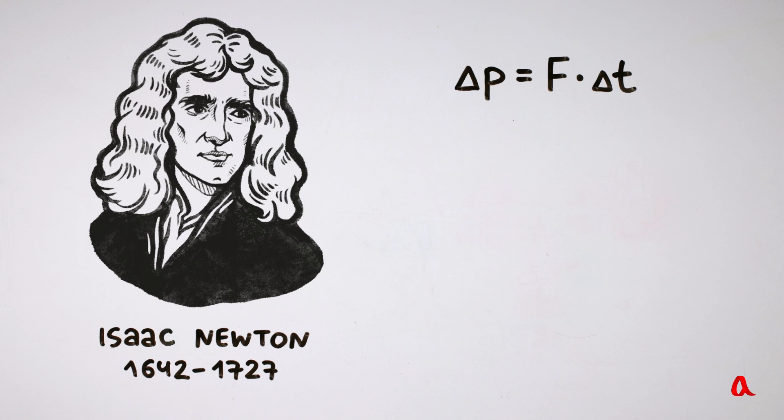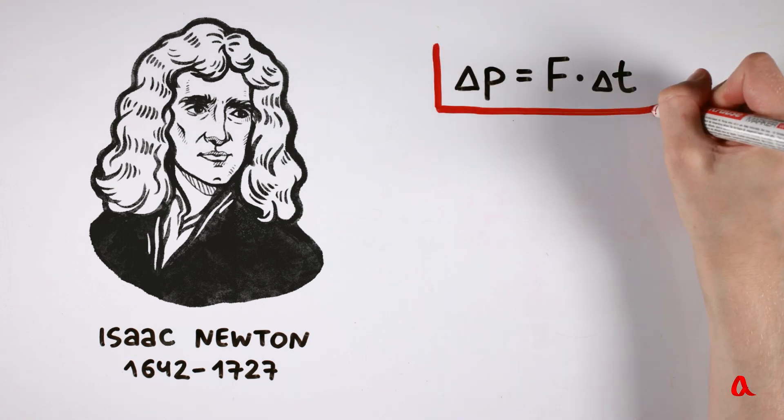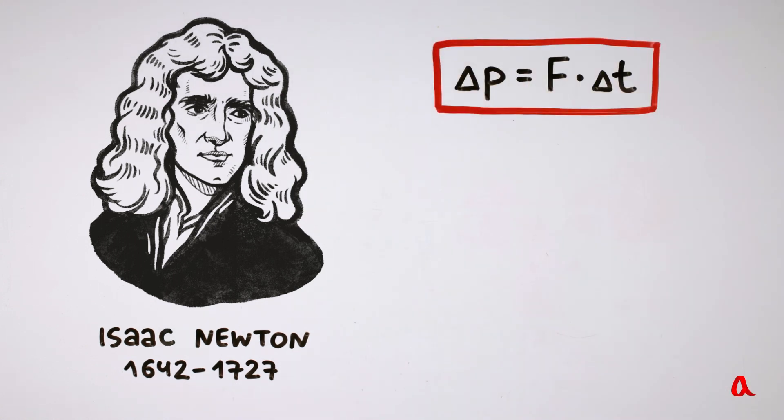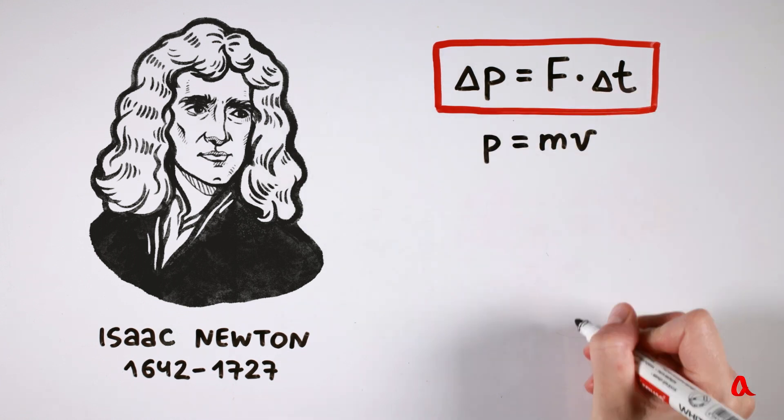We have already written down Newton's second law as delta p equals f by delta t. Impulse p of a body with mass m equals mv. If the mass does not change, the change of delta p impulse in the first formula occurs through the change of speed.